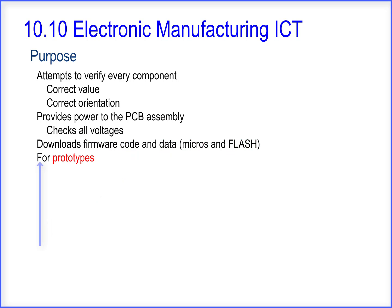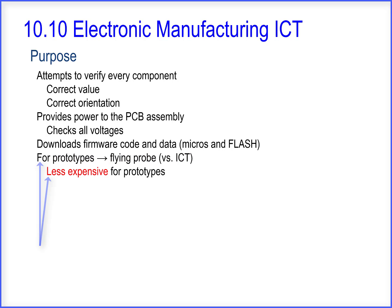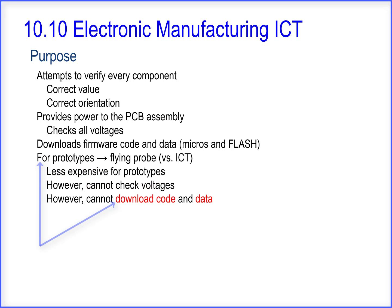For prototypes, a flying probe is often used versus using ICT. A flying probe is less expensive for prototypes. However, it cannot check voltages and it cannot download code and data. A final product uses ICT.